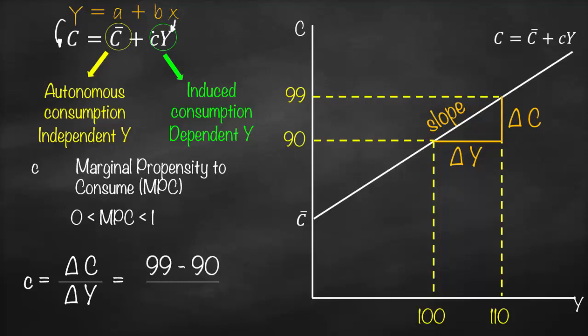What's our change in C? New C minus old C, so it will be 99 minus 90, divided by change in Y: new Y minus old Y, 110 minus 100. So this will give us 9 divided by 10, which means 0.9. So in this example, our MPC, our marginal propensity to consume, is 90% or 0.9. Remember, it's always between 0 and 1.